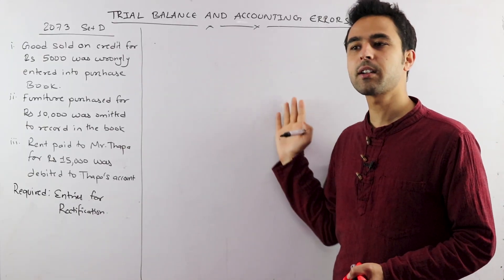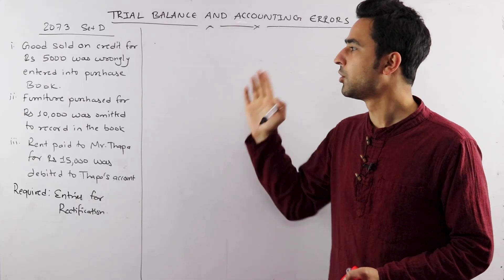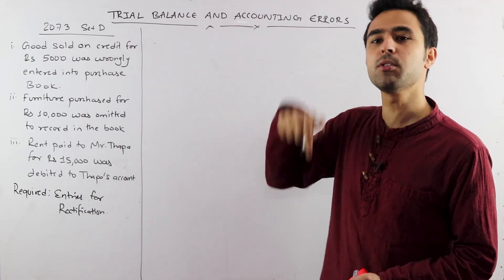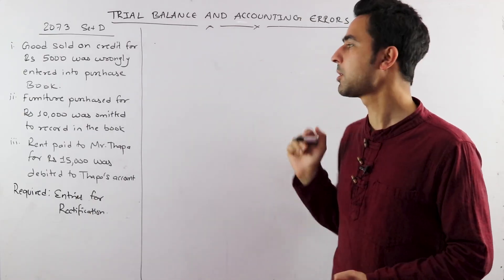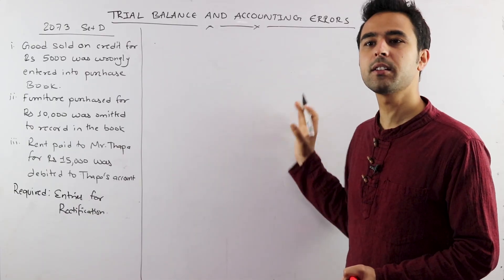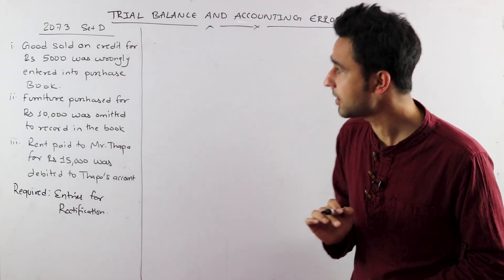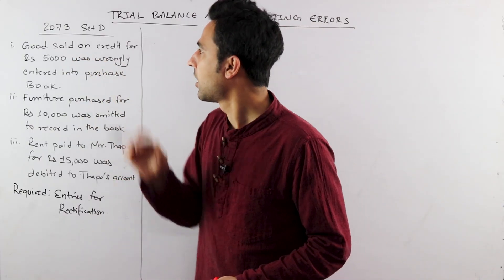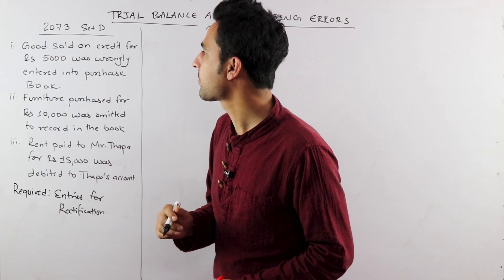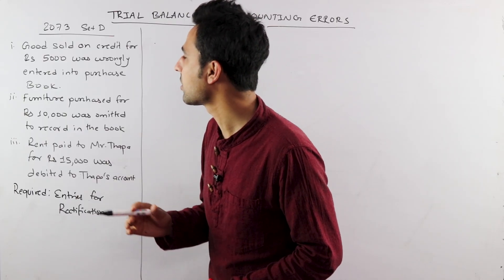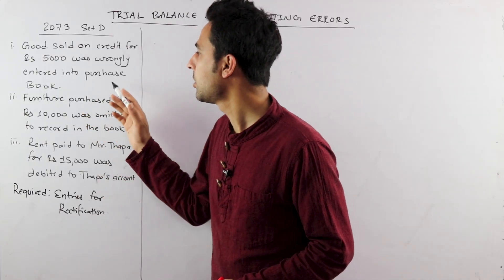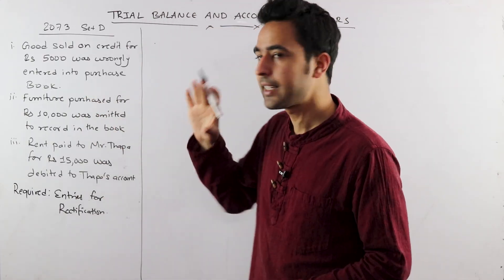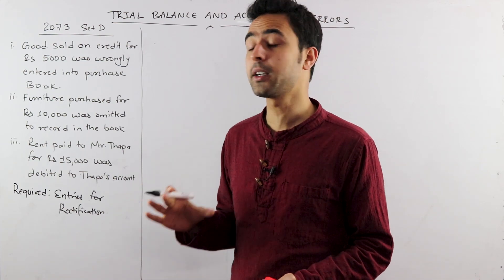Wrong entry and right entry — wrong entry is what you should know. Wrong entry and right entry: first, start with the example. Goods sold on credit for Rs. 5,000 was wrongly entered into the purchase book. First question: what is the wrong and right entry?